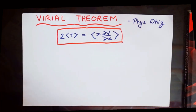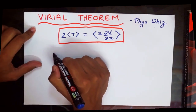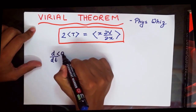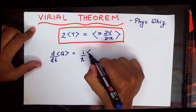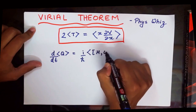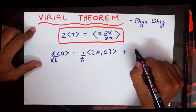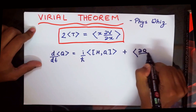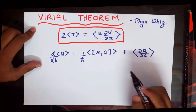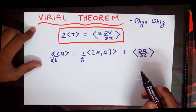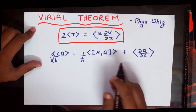To prove it, we will begin by using the Ehrenfest theorem. The Ehrenfest theorem states that the time derivative of the expectation value of some operator Q is given by i over h-bar times the expectation value of the commutator of the Hamiltonian H and the operator Q, plus the expectation value of the partial derivative of Q with respect to time. If you don't know this, you can refer to my other tutorial, but you will need this equation here.